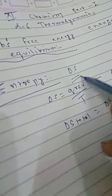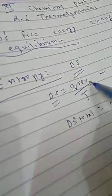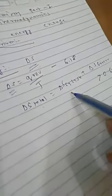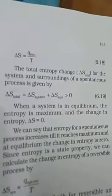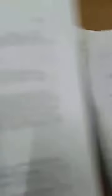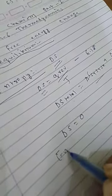I am teaching you some terms for entropy which will come in Gibbs free energy. Entropy is denoted by delta S. The delta S formula is Q reversible upon T — that is equation 6.18. The total entropy is entropy of system plus entropy of surrounding — equation 6.19 — and this is greater than 0.